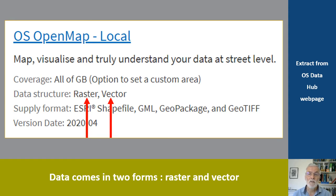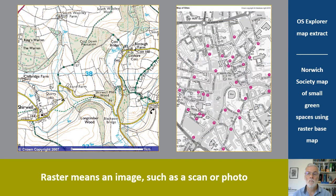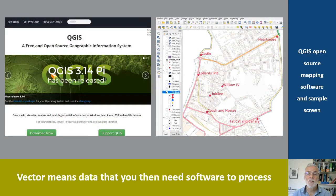Data comes in two forms: raster and vector. Raster is easy to understand and use. It's an image, the same as if you take a photo or scan a document, and it can be manipulated in the same way — for example by cropping or adding arrows or text boxes. It's what I used when I started using open data, because vector data sounded rather daunting. This map of small green spaces in Norwich City Centre was produced by cropping a raster map, converting to grayscale, and then adding the marker dots using desktop publishing.